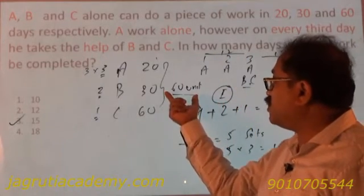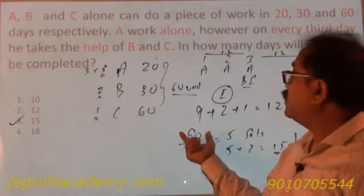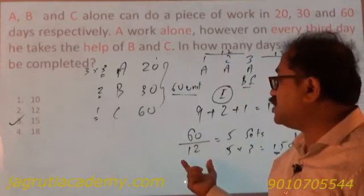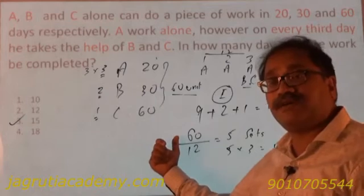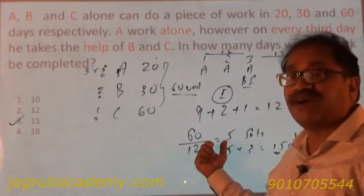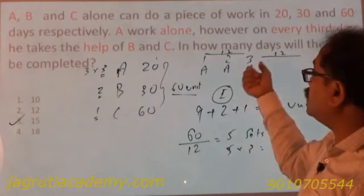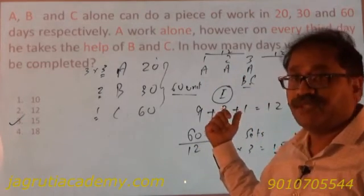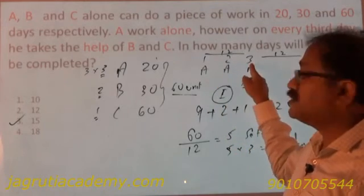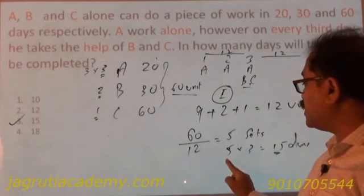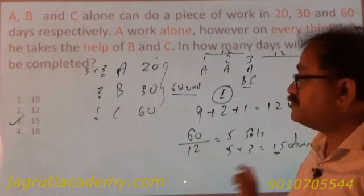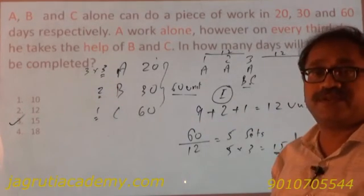The total work is 60 units and in 1 set 12 units are completed, so 60 divided by 12 gives 5 sets needed. Each set consists of 3 days, so 5 sets will consist of 5 into 3 which is 15 days. That's how your answer is 15.